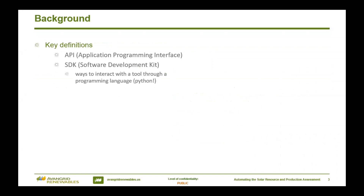A bit of background — a lot of you probably already know this. An API is an application programming interface. An SDK is a software development kit. PVlib is actually just a Python package. You don't really need to know what these acronyms stand for. What you need to know is that it's a way to interact with a pre-existing tool using a programming language. For example, SAM has an SDK that allows you to run their solar modeling through Python. Solar Farmer has an API that allows you to run their software programmatically.